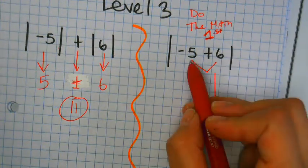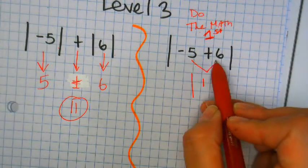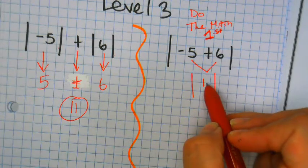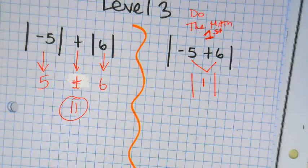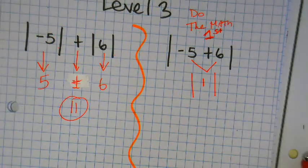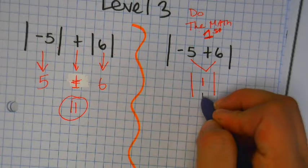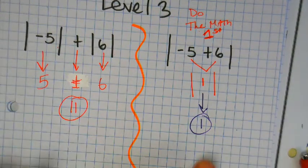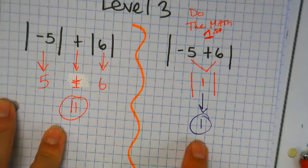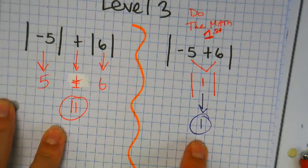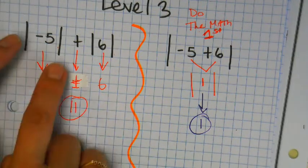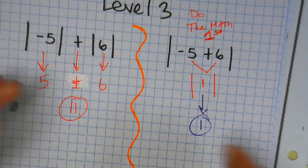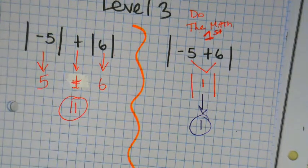You ask yourself, okay, it's negative five plus six. Okay, the signs are different, so I'm going to subtract. I have more positives, so my answer is one. Did I take the absolute value? No, not yet. Now, what is the absolute value of one? One.